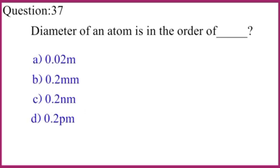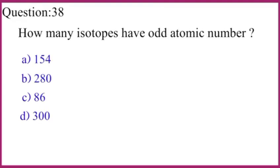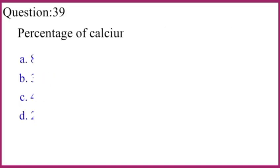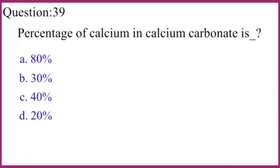The diameter of an atom is in the order of 0.2 nanometers. How many isotopes have an odd atomic number? The correct answer is 86. What is the percentage of calcium in calcium carbonate? The correct answer is 40%.